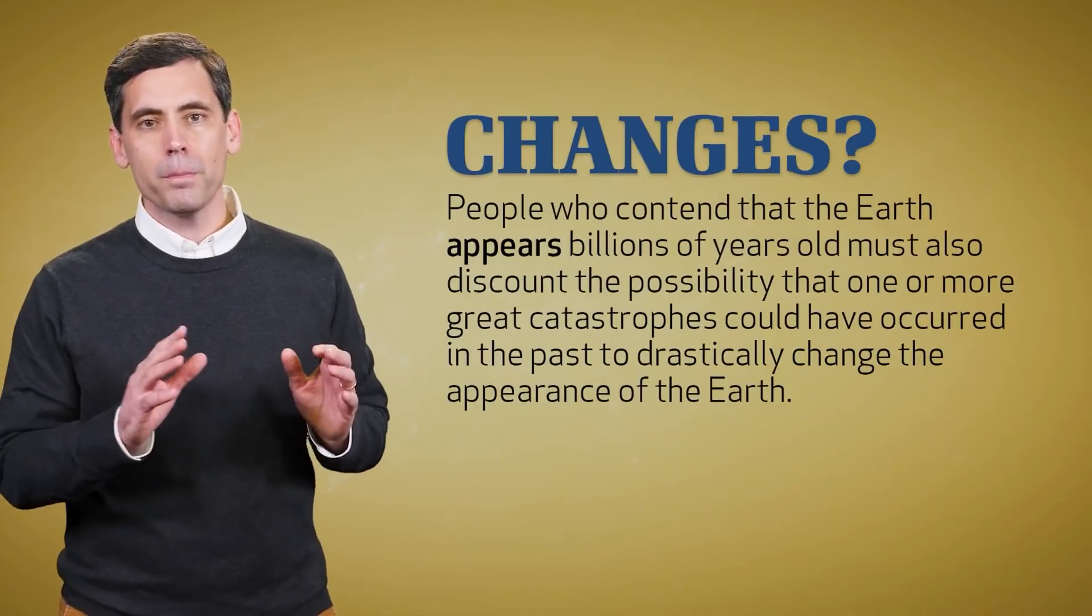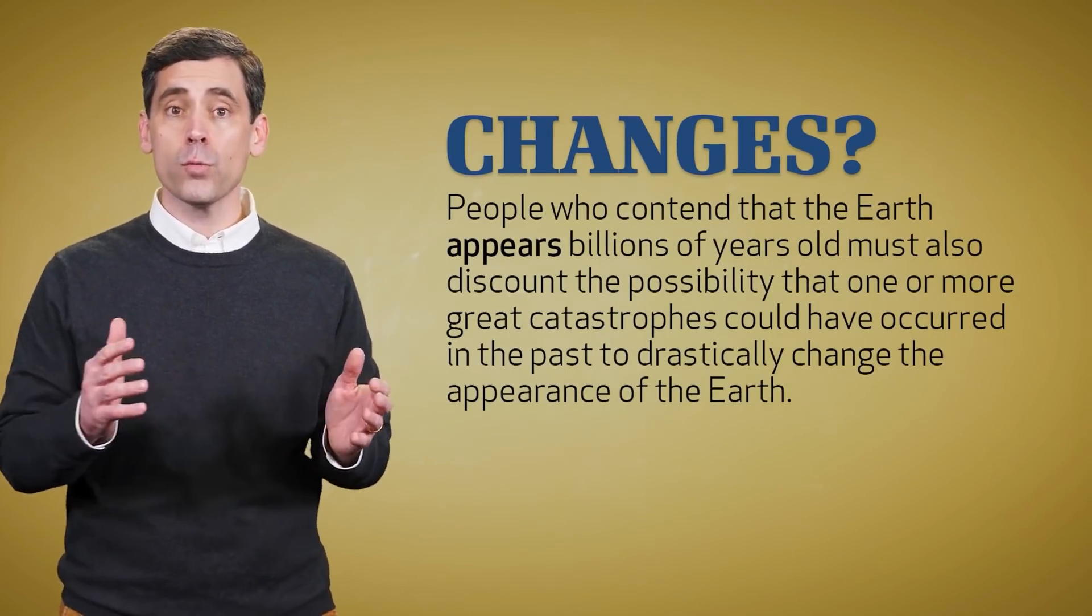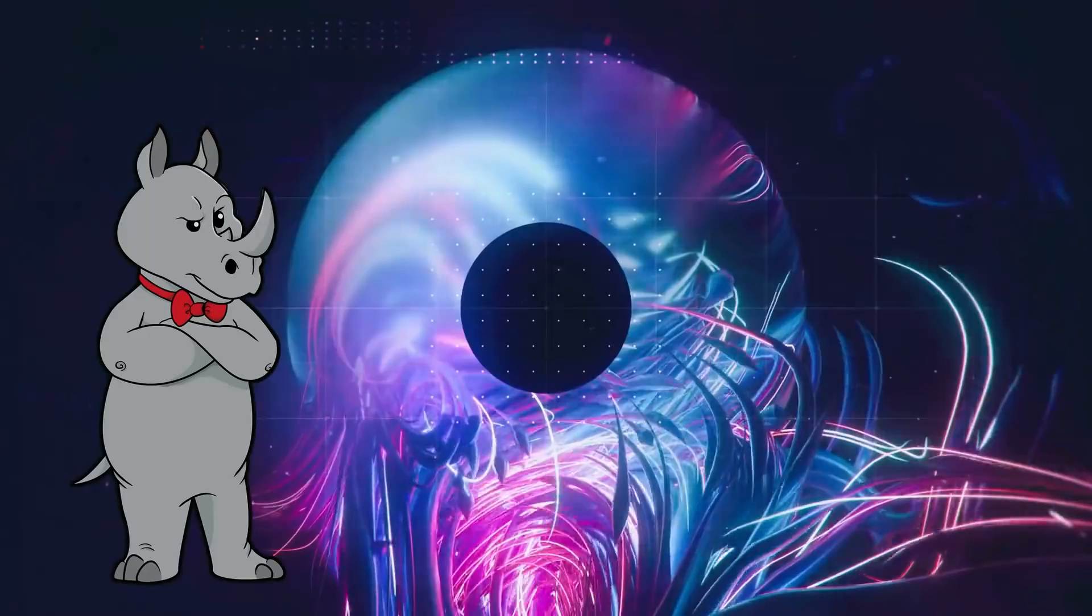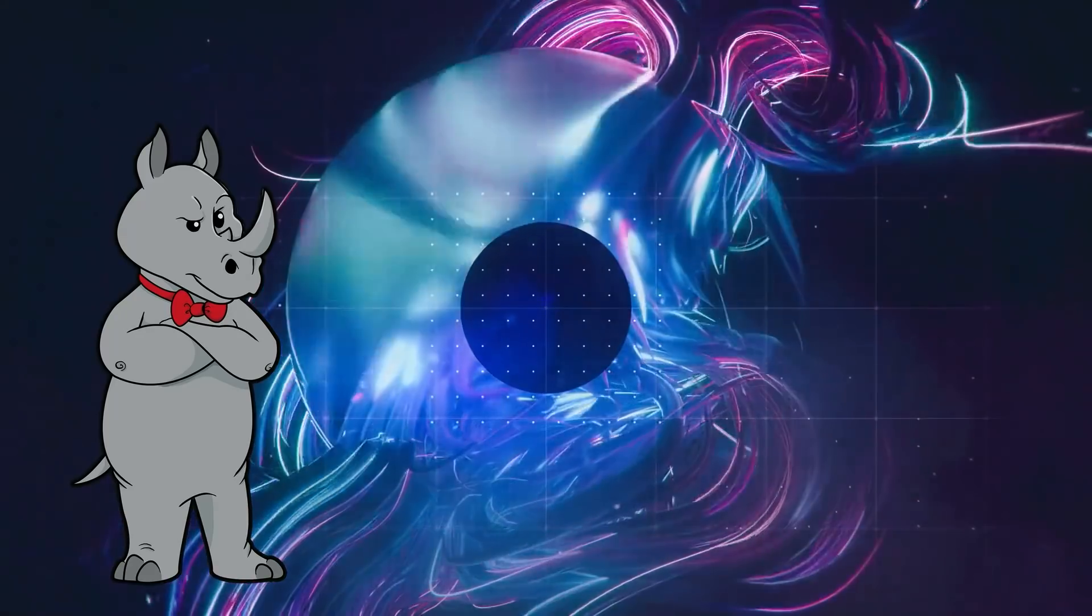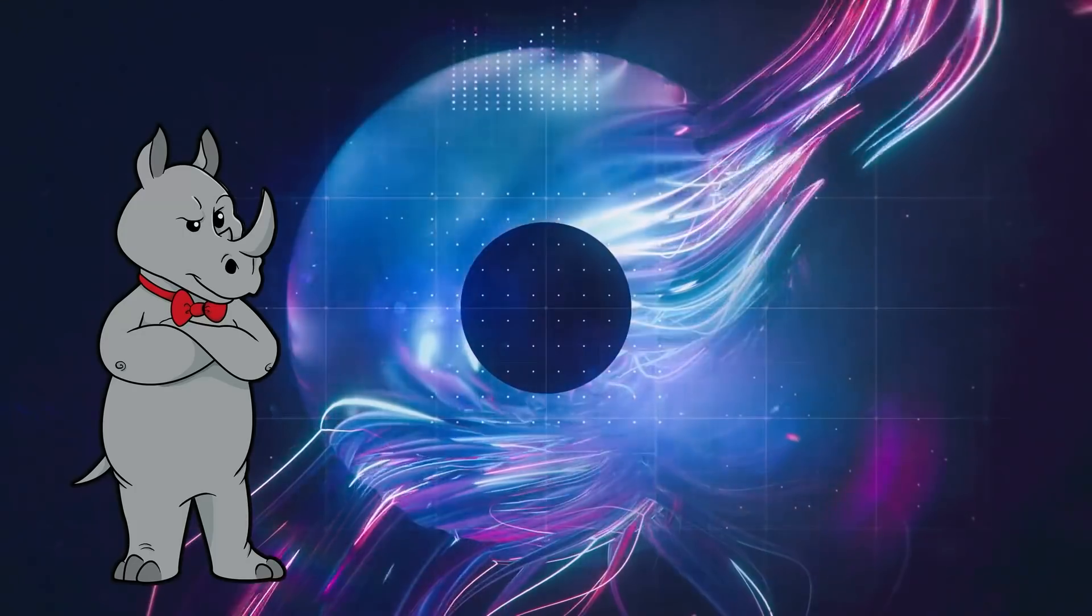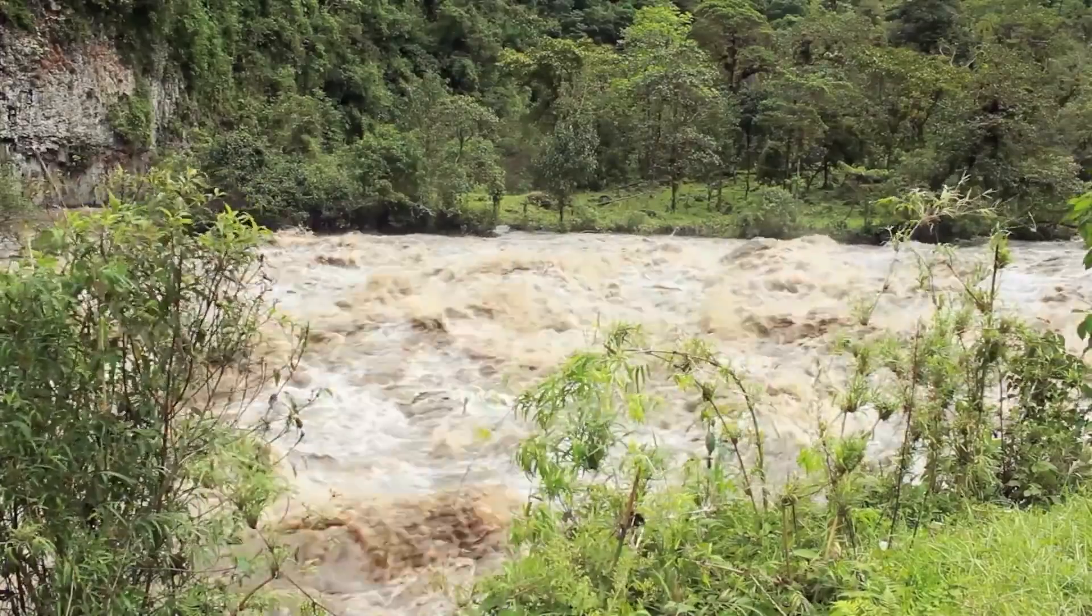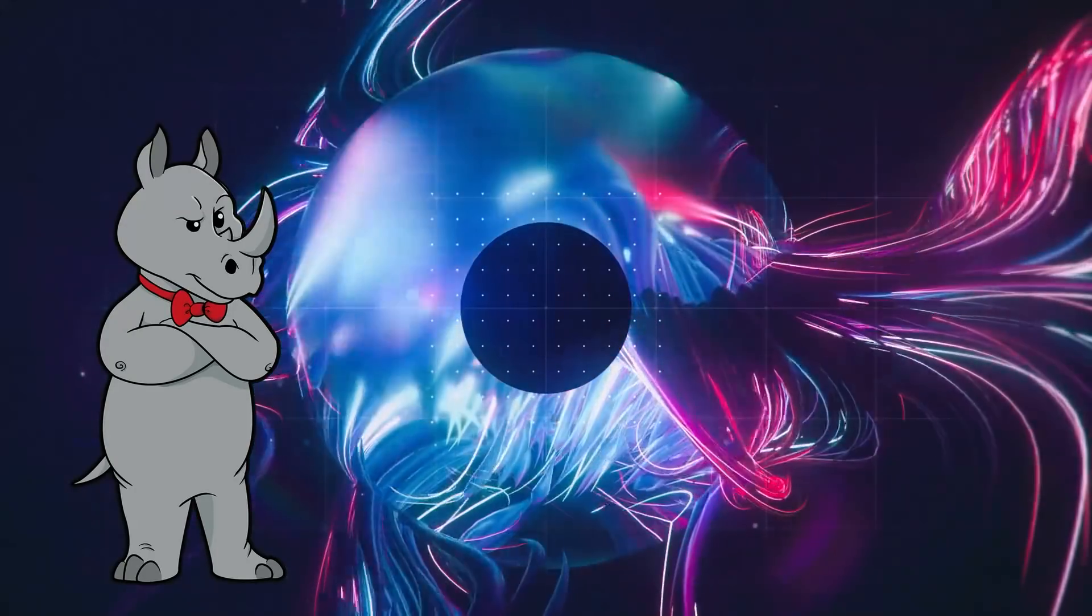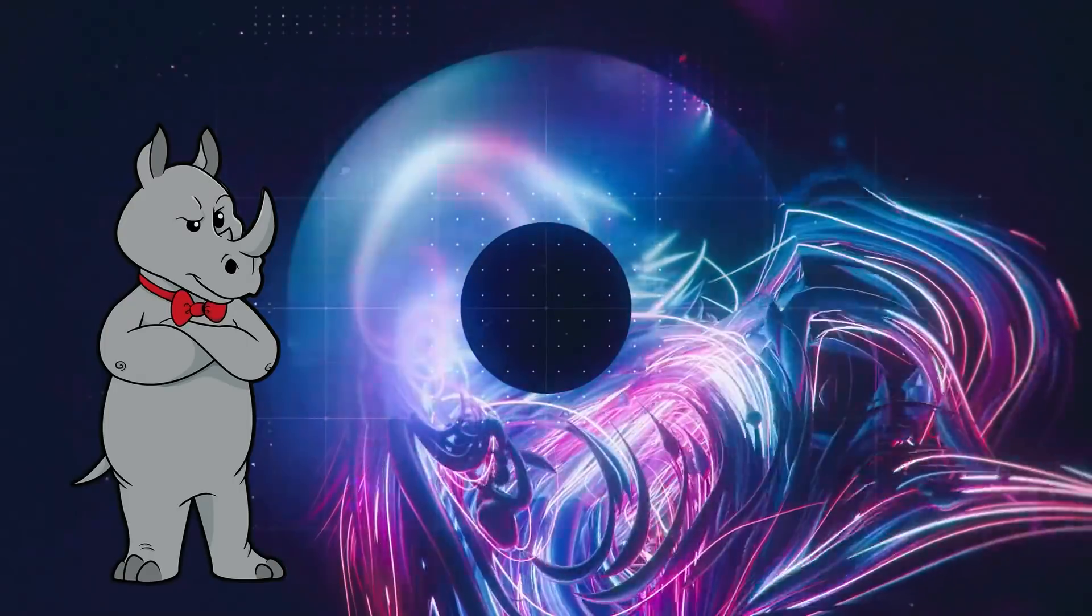People who contend that the Earth appears billions of years old must also discount the very real possibility that one or more great catastrophes could have occurred in the past to drastically change the appearance of the Earth. Quite the contrary. We know of a number of such catastrophes. We just don't blindly accept the one that you want to have happened because there is literally no evidence for it and a plethora of evidence against it. Earthquakes, volcanoes, and local floods radically alter the looks of certain places on Earth. Yeah. And we can see evidence of such events in the geologic record going back billions of years. How does that help your case?